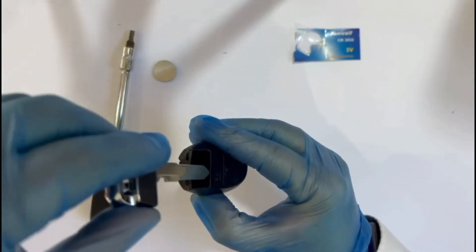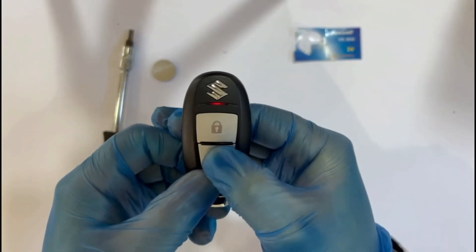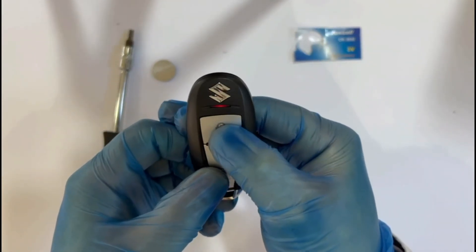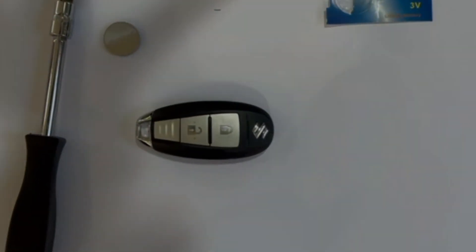Now obviously put the key fob back in until it clicks and just check that it works. And that is how simple it is to change the battery in your key fob for a Suzuki.